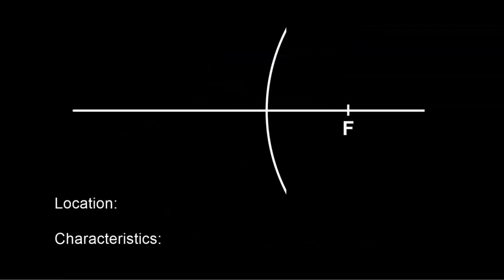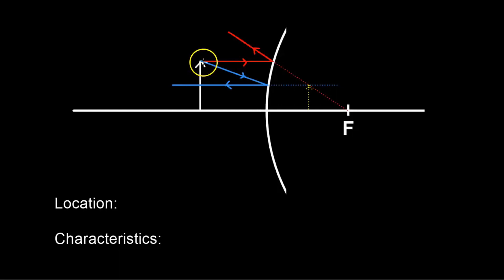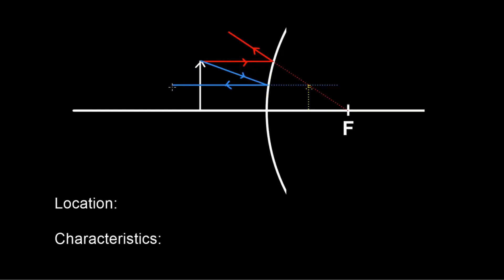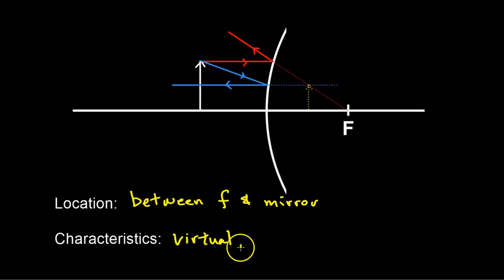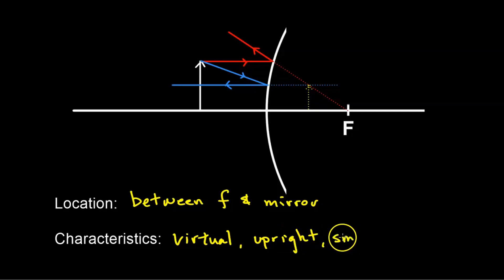Now we'll take a look at a convex mirror. The red ray goes parallel to the optical axis and reflects away from the focal point. The blue ray goes towards the focal point and reflects parallel to the optical axis. These two rays diverge, so we extend the reflected rays back, and where they intersect is where the image is — between F and the mirror. The characteristics are: the image is virtual, meaning placing paper there would give no image since light bounces back on the same side of the mirror. It is upright, and smaller than the object.